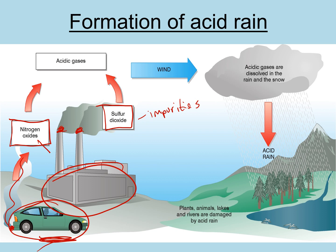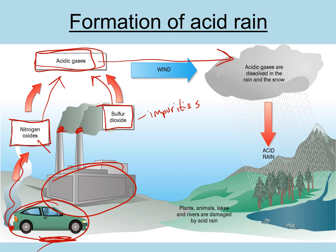Both the nitrogen oxides and the sulfur dioxide are gases in the air. In the atmosphere there's humidity and moisture, and these gases are highly soluble — they dissolve in that water. The acidic gases dissolve in atmospheric water, come together and form clouds. The wind blows them to a particular area, and the acidic gases dissolved in the cloud liquid form rain and snow that falls down onto the land.